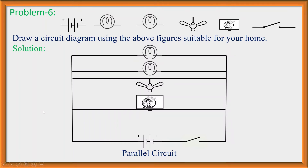We connect individual switches for each device. When a switch is on, current flows through that device — for example, the television or the fan or the bulb. The other devices remain disconnected. This is the suitable circuit for our home, because with a parallel circuit we can individually control each device.